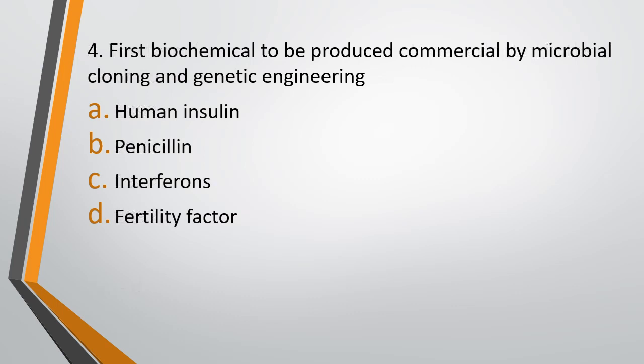Question 4. First biochemical to be produced commercially by microbial cloning and genetic engineering is: Option A, human insulin. Option B, penicillin. Option C, interferons. Option D, fertility factor. The correct answer is option A, i.e. human insulin.